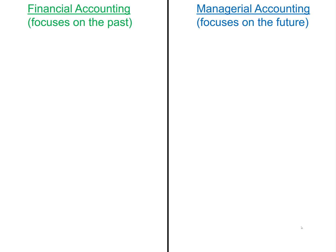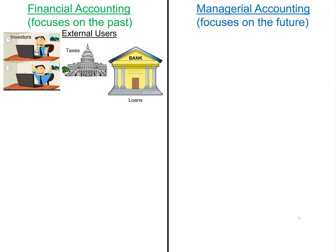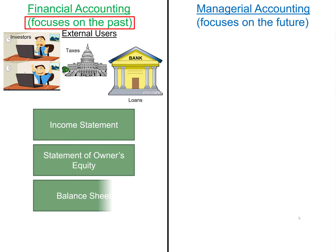Now let's compare and contrast financial accounting, which is what we learned in earlier chapters, with managerial accounting. Financial accounting provides information for external users such as investors, the government, and creditors like a bank to help decide if they should give the company a loan. Financial accounting focuses on the past, not the future, and is concerned with creating the four financial statements.